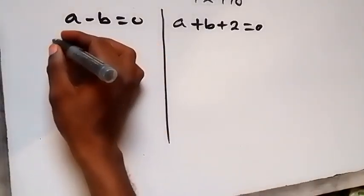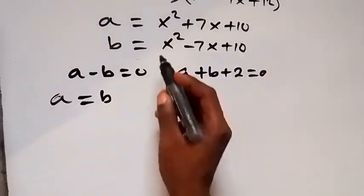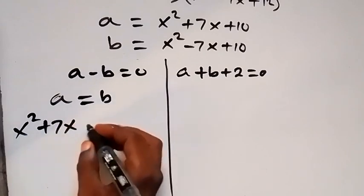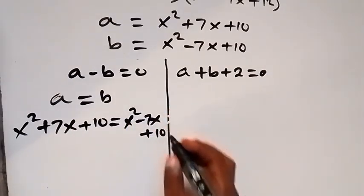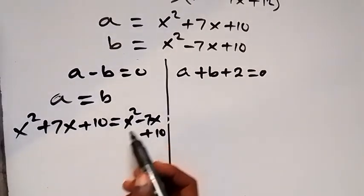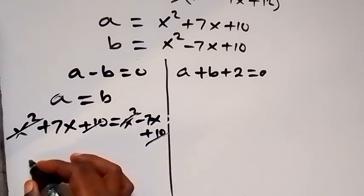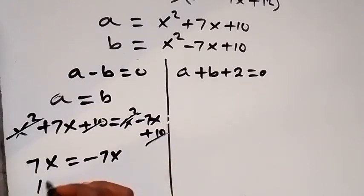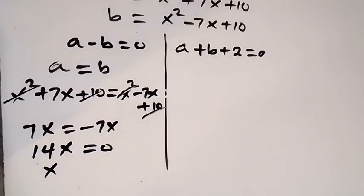Case 1: a = b. Substituting: x² + 7x + 10 = x² − 7x + 10. The x² and +10 terms cancel, leaving 7x = −7x, so 14x = 0, giving x = 0.